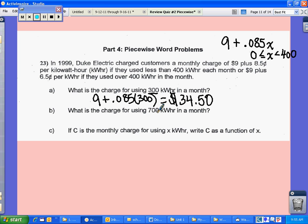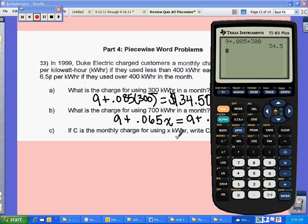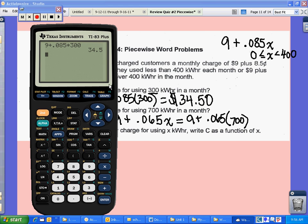The second piece, what is the charge for using 700 kilowatt hours? Well, that's over 400. So that's going to be $9 plus 6.5 cents, which is .065 times X. So you're going to say 9 plus .065 times 700. And again, plug that in. So 9 plus .065 times 700. And you're going to get $54.50.